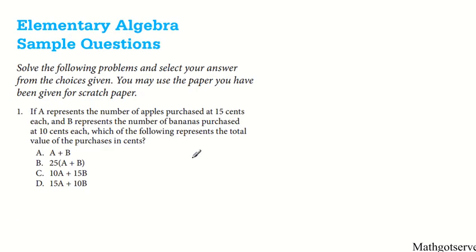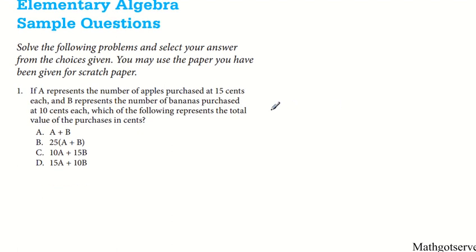Let's take a look at question 1. It says if A represents the number of apples purchased at 15 cents and B represents the number of bananas purchased at 10 cents, which of the following represents the total value of purchases in cents? You just need to remember that the total price is given by quantity multiplied by the unit price.